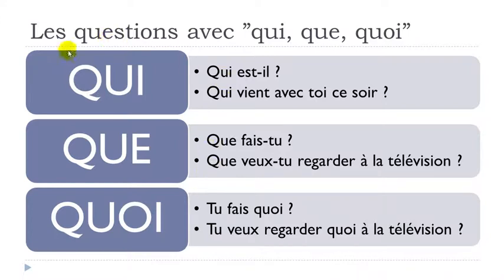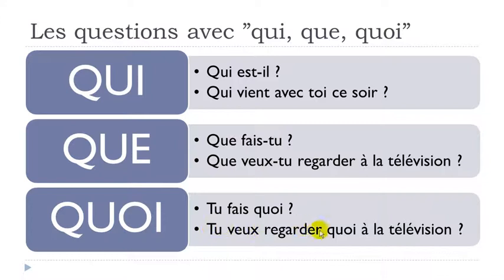Let's repeat: QUI means WHO — Qui est-il? Qui vient avec toi ce soir? QUE means WHAT and you start the question with it — Que fais-tu? Que veux-tu regarder à la télévision? And QUOI also means WHAT, but you don't start the question with it — Tu fais quoi? Tu veux regarder quoi à la télévision?